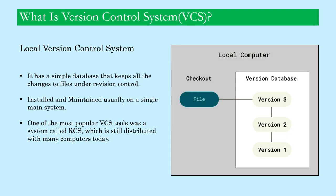The first type is local version control system. In our day-to-day life we keep our daily work in folders or directories by giving some useful names we can remember easily. This approach is very common because it is simple, but it is also incredibly error prone because it is easy to forget which directory we are in and accidentally write to the wrong file or copy over files we don't mean to.